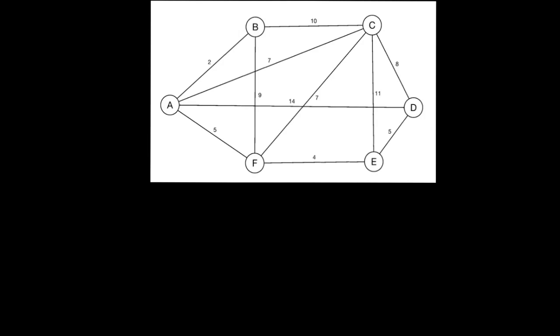In order to answer the route inspection problem, sometimes called the Chinese postman's problem, we first need to identify each of the nodes that are of odd order.